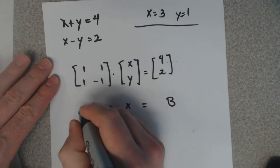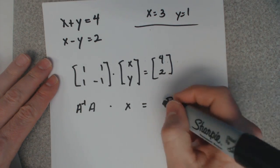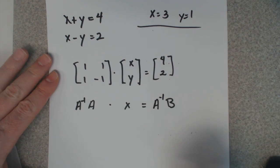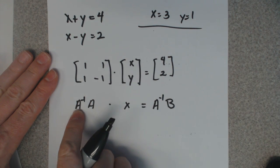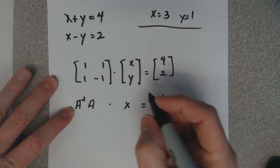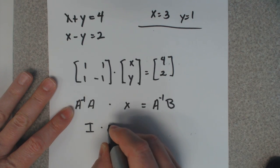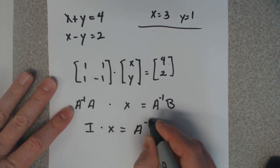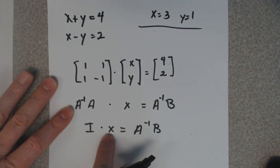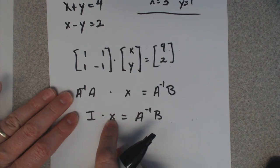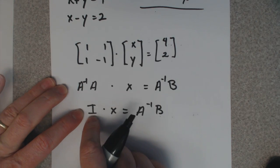If you multiply this side over here by A inverse and multiply this side over here by A inverse, then A inverse times A equals the identity matrix. Well, anything times identity is just that thing, so basically it's like multiplying by one and you just don't write it.